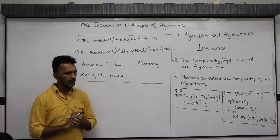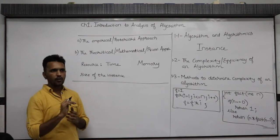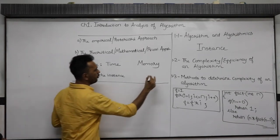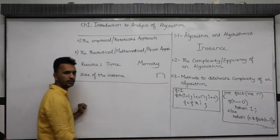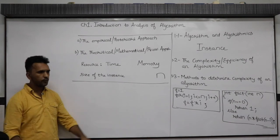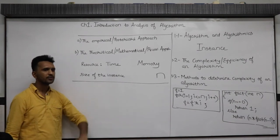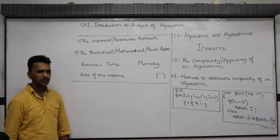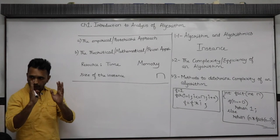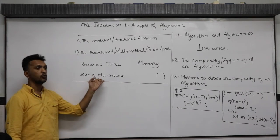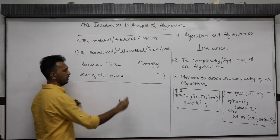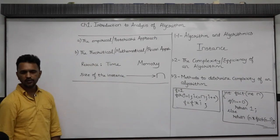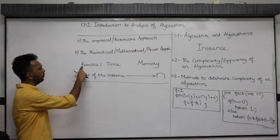In C programming, in many programs you use a variable n. Normally, that variable n stores the number of elements. So that number of elements, in this subject, is known as the size of the instance. Size of the instance is nothing but n — the number of elements.